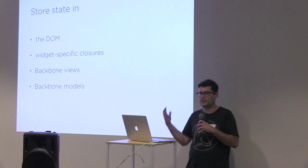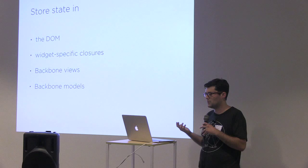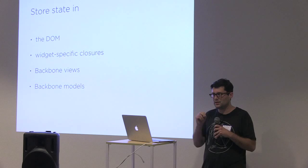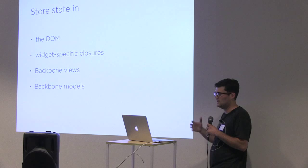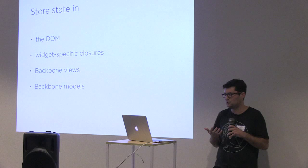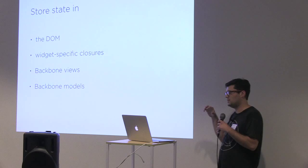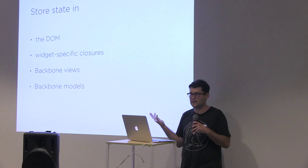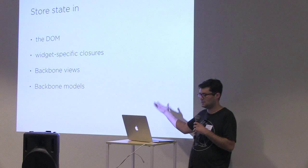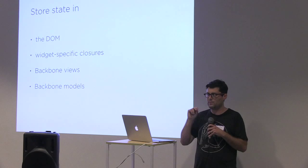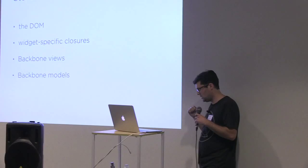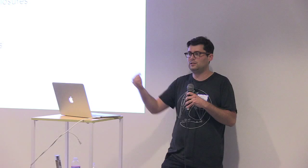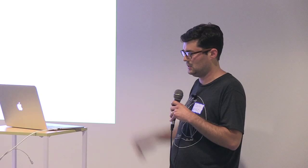If you store state in the DOM, the other views have to know where in the DOM to look for it. If you hold state in the model as a Backbone model attribute, when you persist that model to your REST API you'll be pushing up all this interaction state and your API will have no idea what an X axis is. If you don't put it in model attributes but attach it as properties on the model, you end up with lots of boilerplate — setters and getters, triggering manual events. It works, but it becomes clunky and doesn't scale as well.